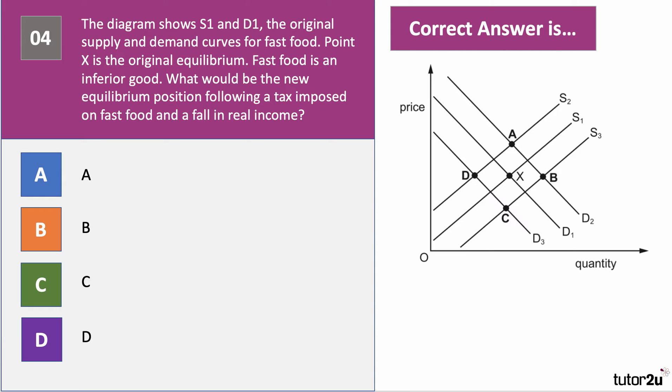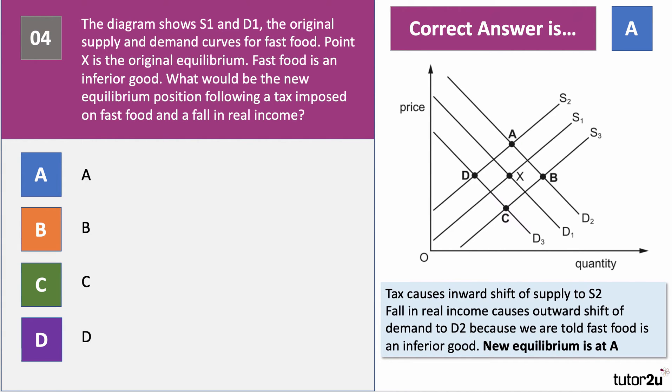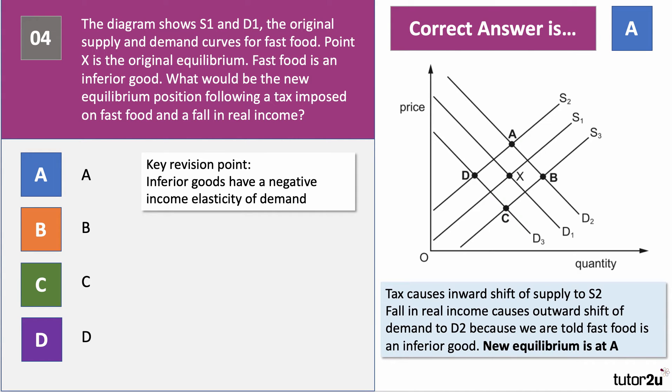The right answer to question four is A. The tax causes an inward shift of supply to S2, so it could only be A or D. We're told there's a fall in real income, but fast food is an inferior good — it has a negative income elasticity. So if income goes down, demand actually shifts out from D1 to D2, making the equilibrium point A. The key revision point is that inferior goods have a negative income elasticity of demand.